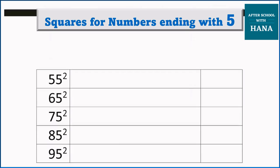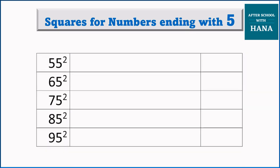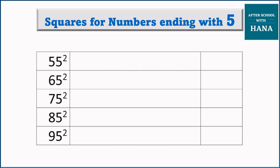Okay, it is here. 55 squared. What is here? 5. What we are going to do with 5? We will multiply it by 6. 5 times 6 is 30. So we get 30. What will be the last two digits? 2 and 5, which is 25. So 55 squared is 3025.